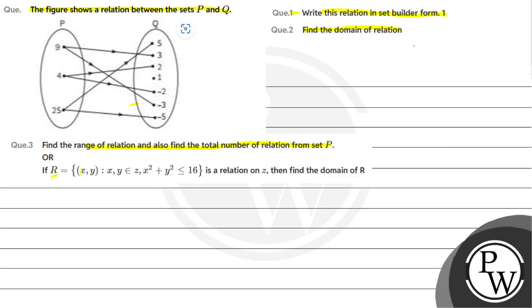If R equals the set of ordered pairs (x, y) where x, y belong to Z, and x² + y² ≤ 16 is the relation on Z, then find the domain of R.